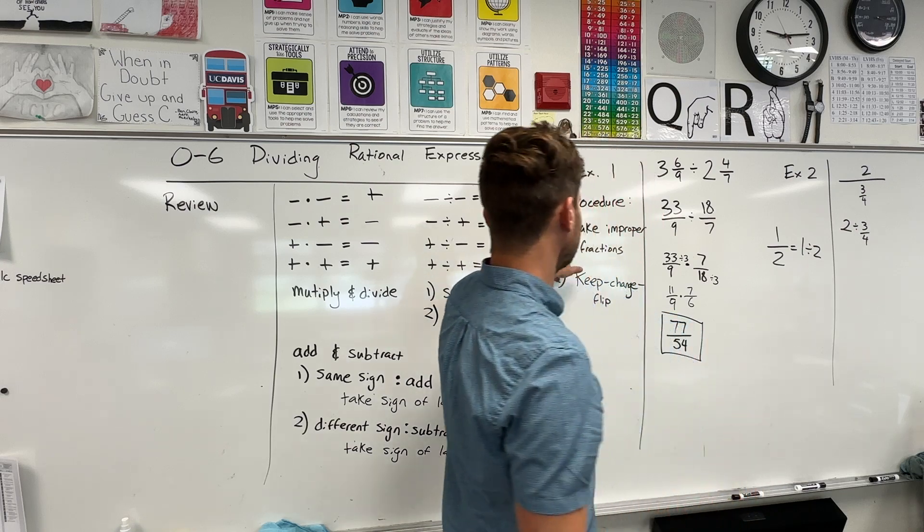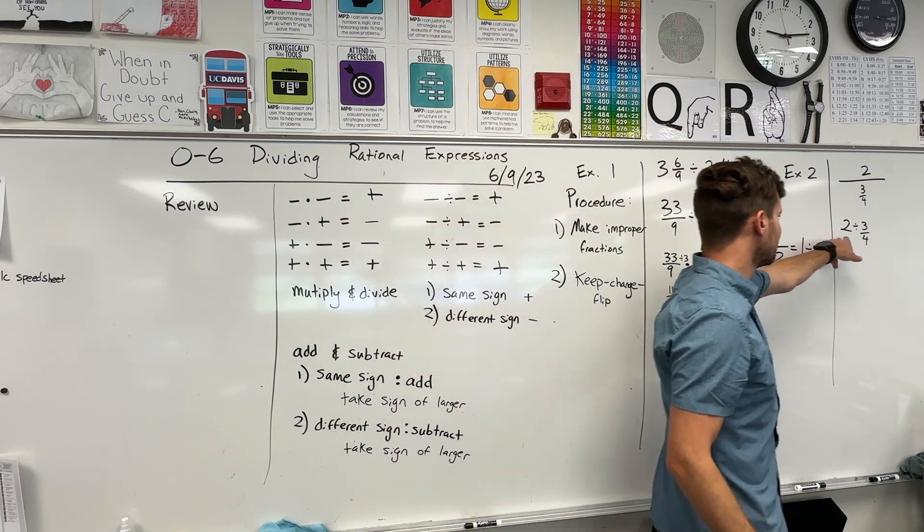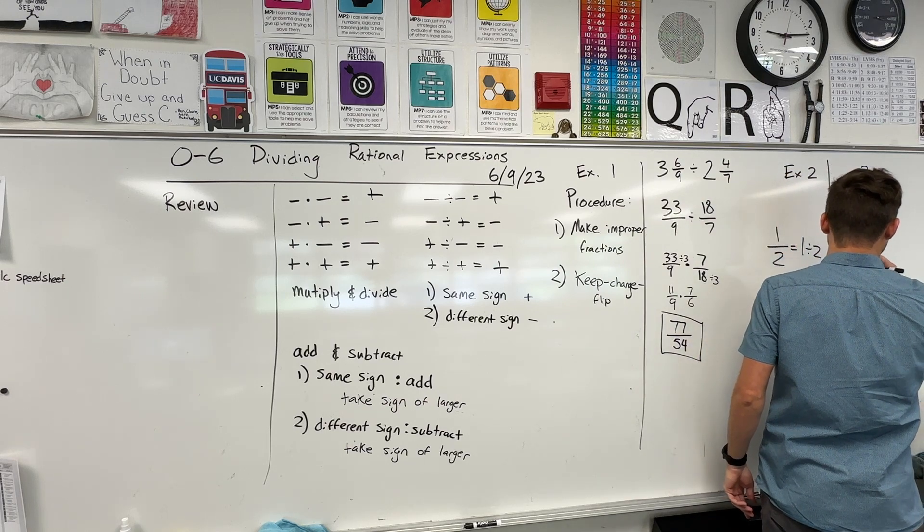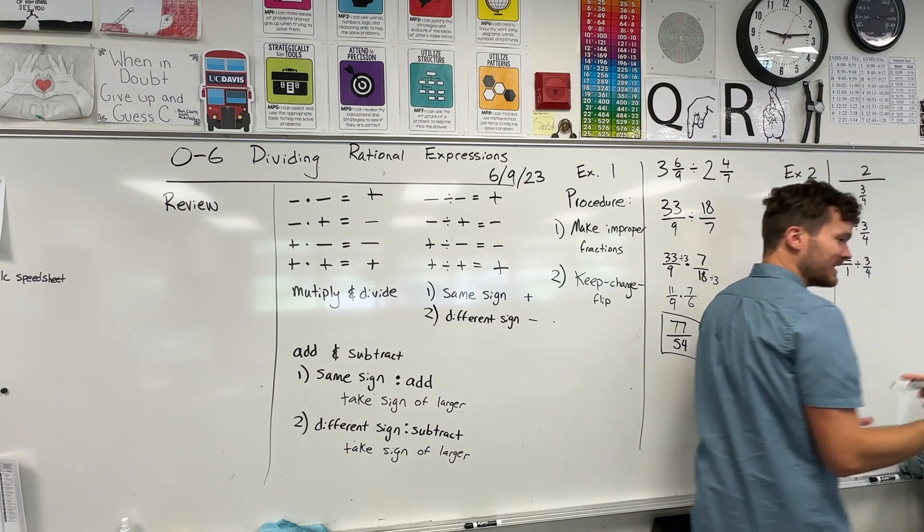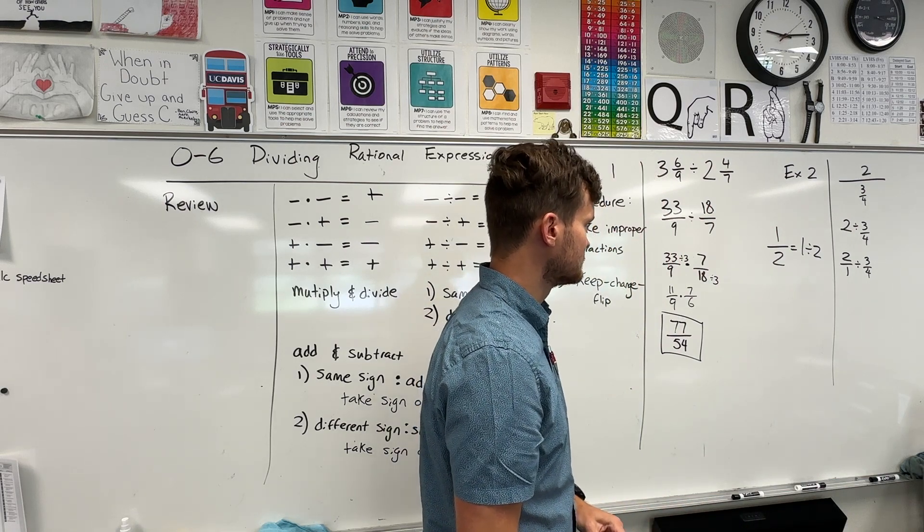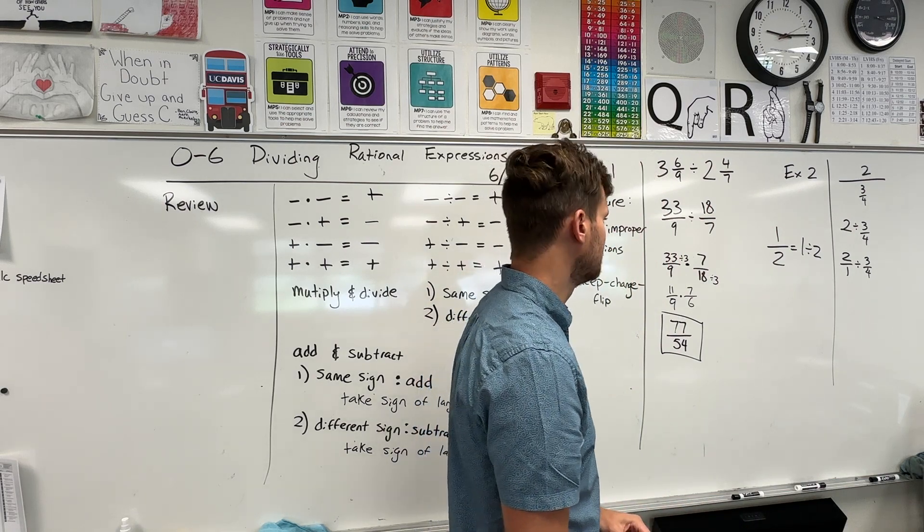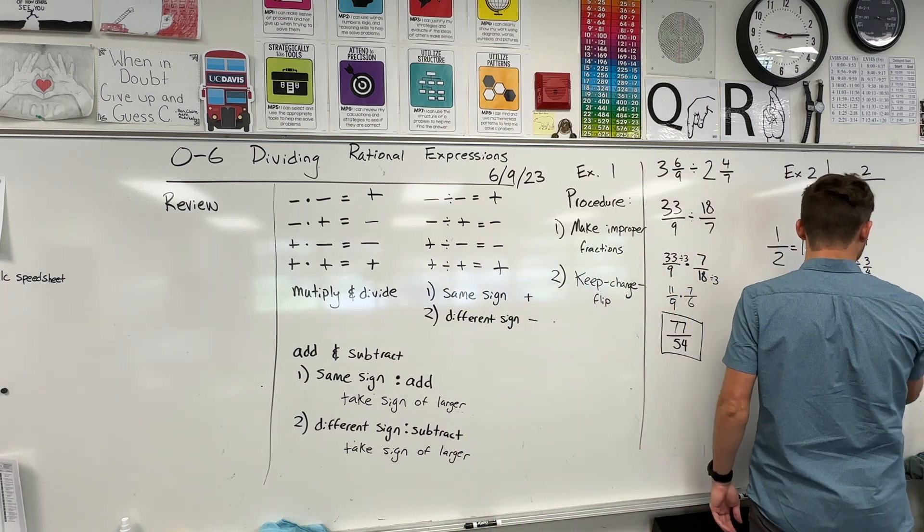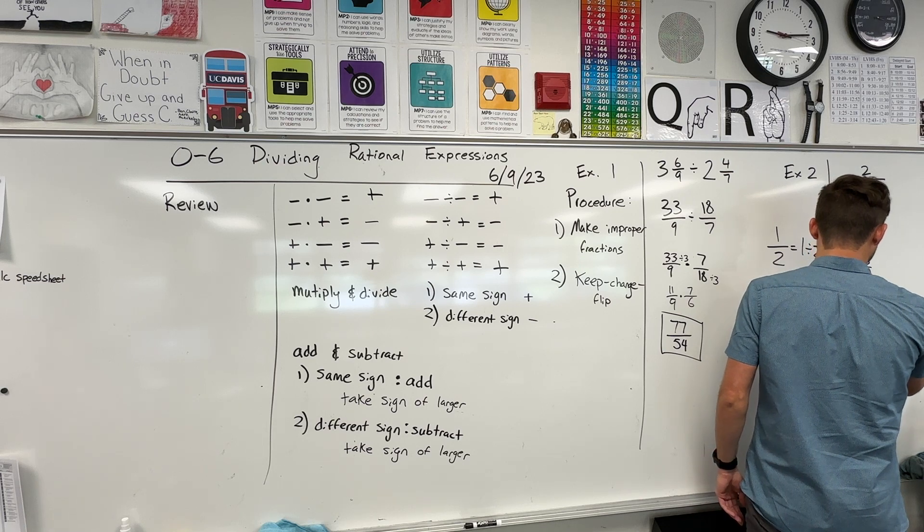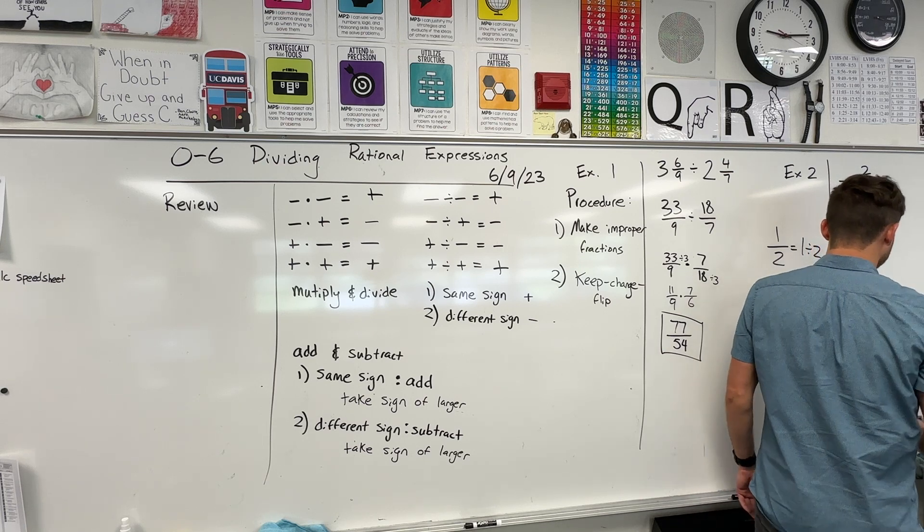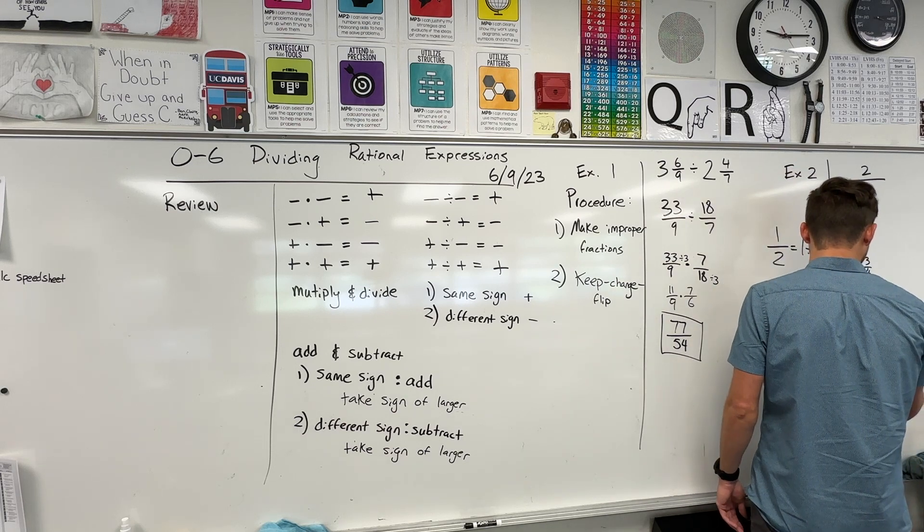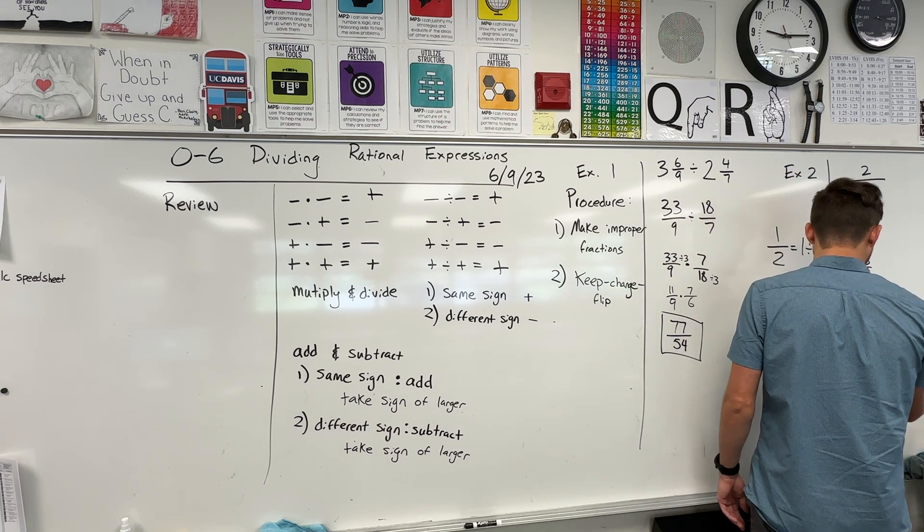I still haven't done this. It's not an improper fraction. This is two. I need a fraction. So I'm going to convert this as two over one divided by three over four, and then I'm ready to do a keep change flip. Mellie, can you just read out what I should write down? Two over one times four over three. Evan, shout out the answer. Eight over three. Done.